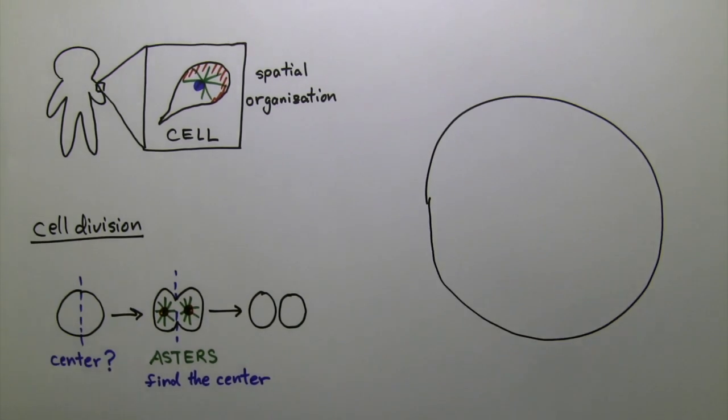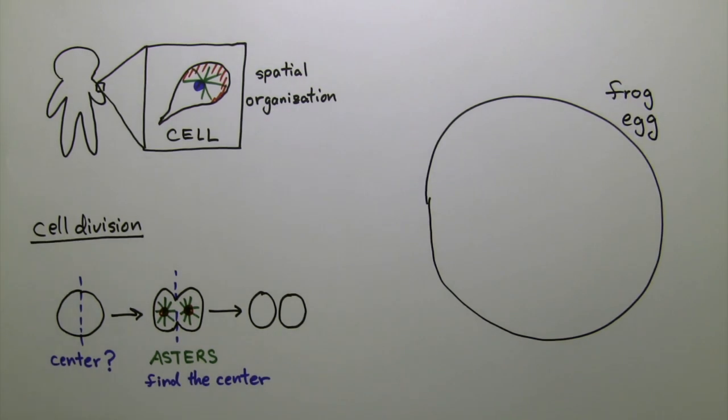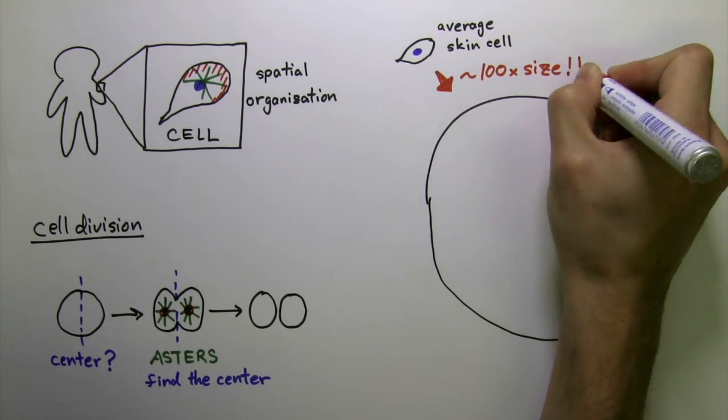Now, try building a very large aster, so large that it can fill up the millimeter-sized frog egg. Frog eggs are one of the largest cells found in nature and are 100 times larger than your average skin cell.